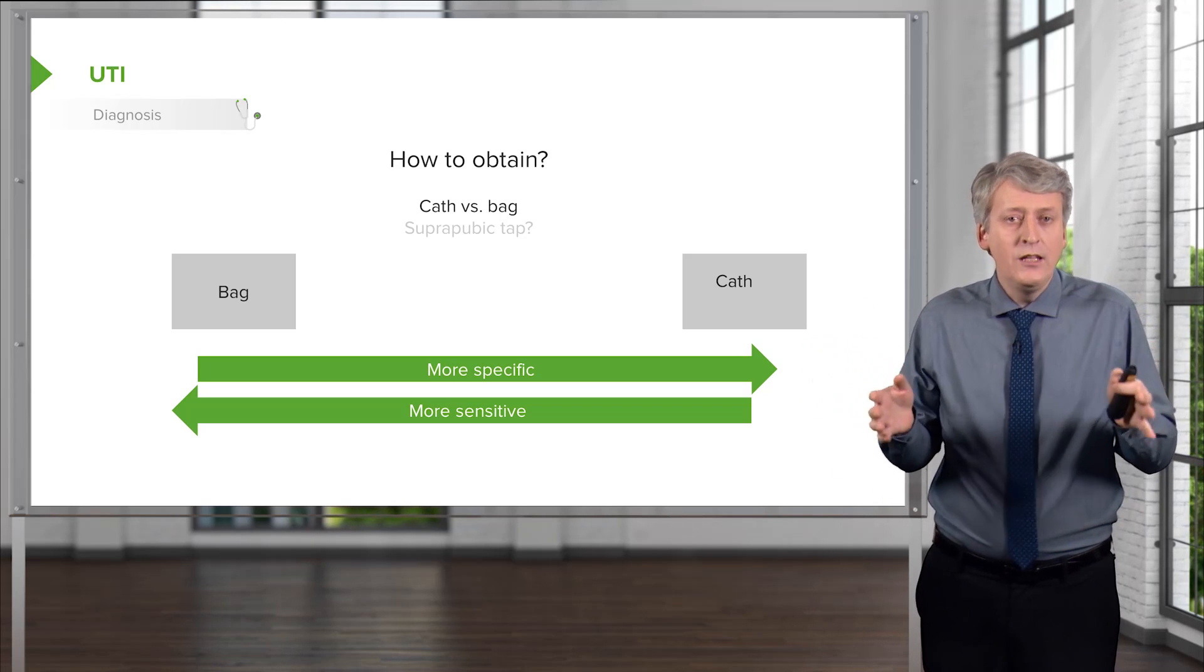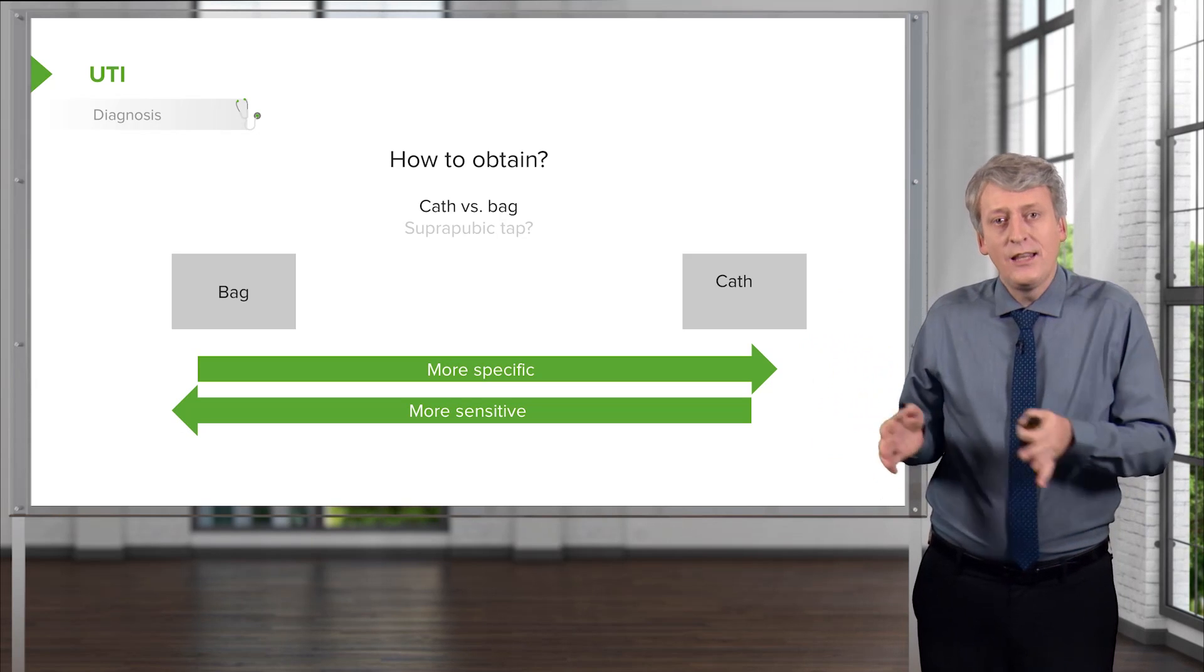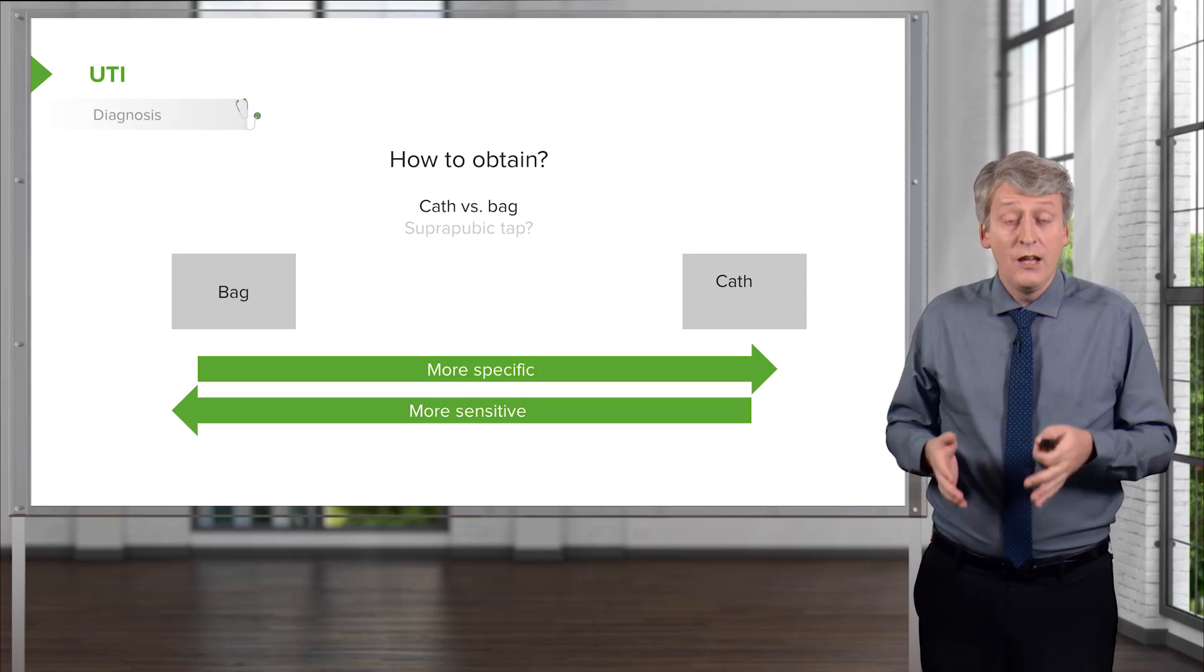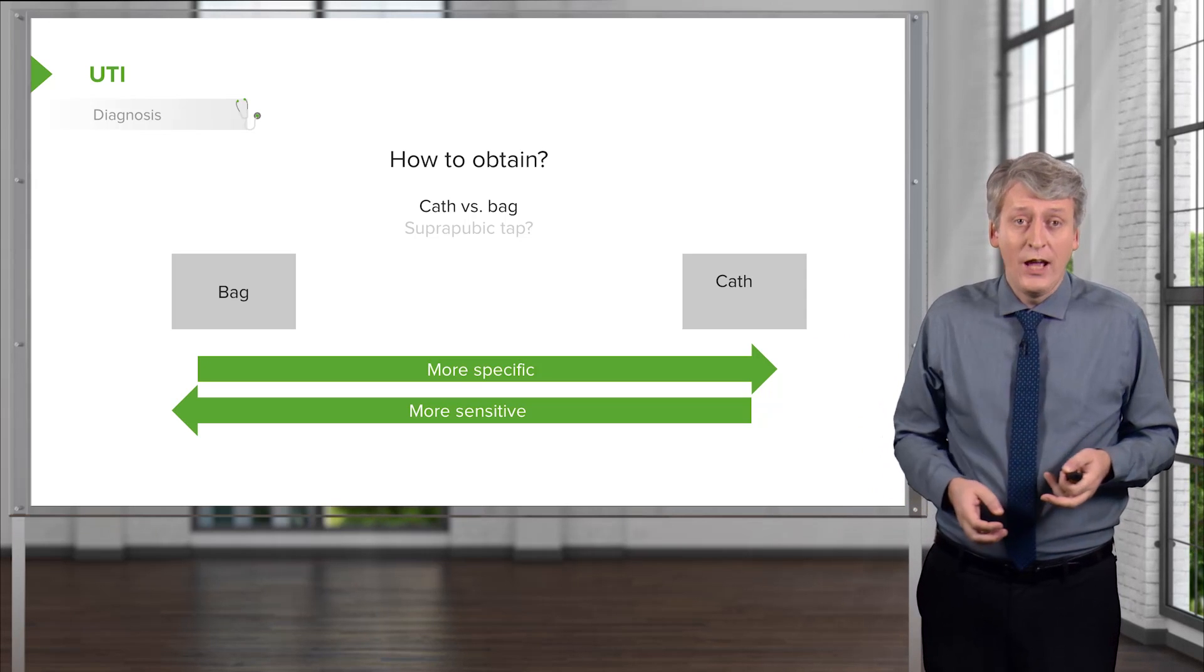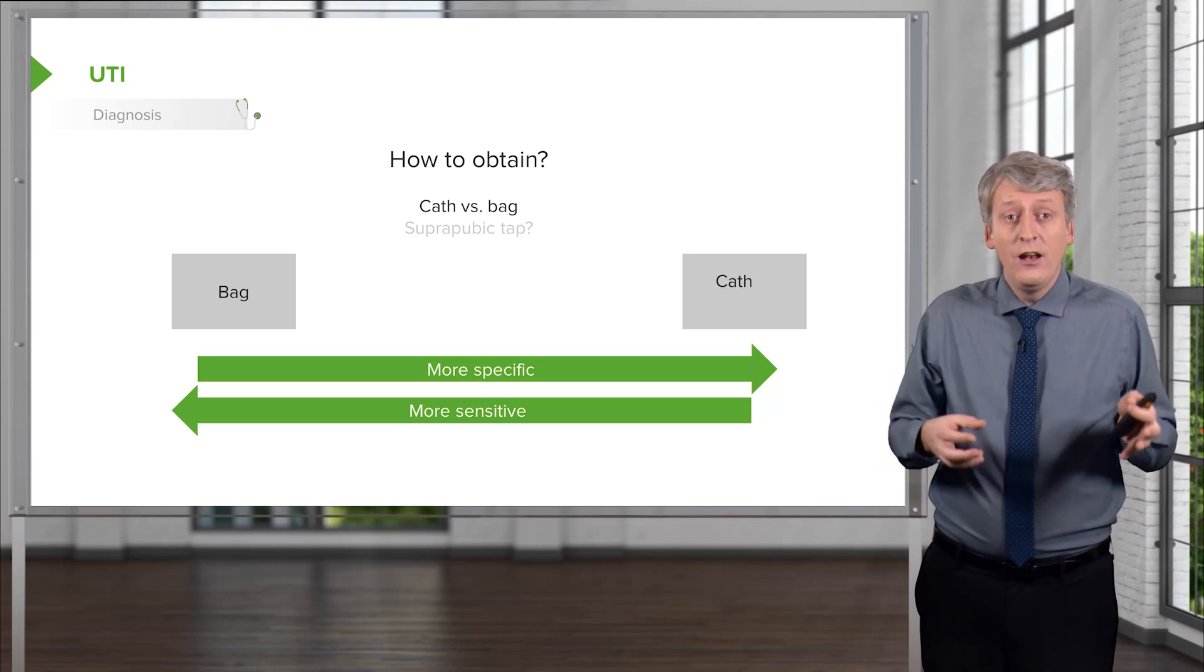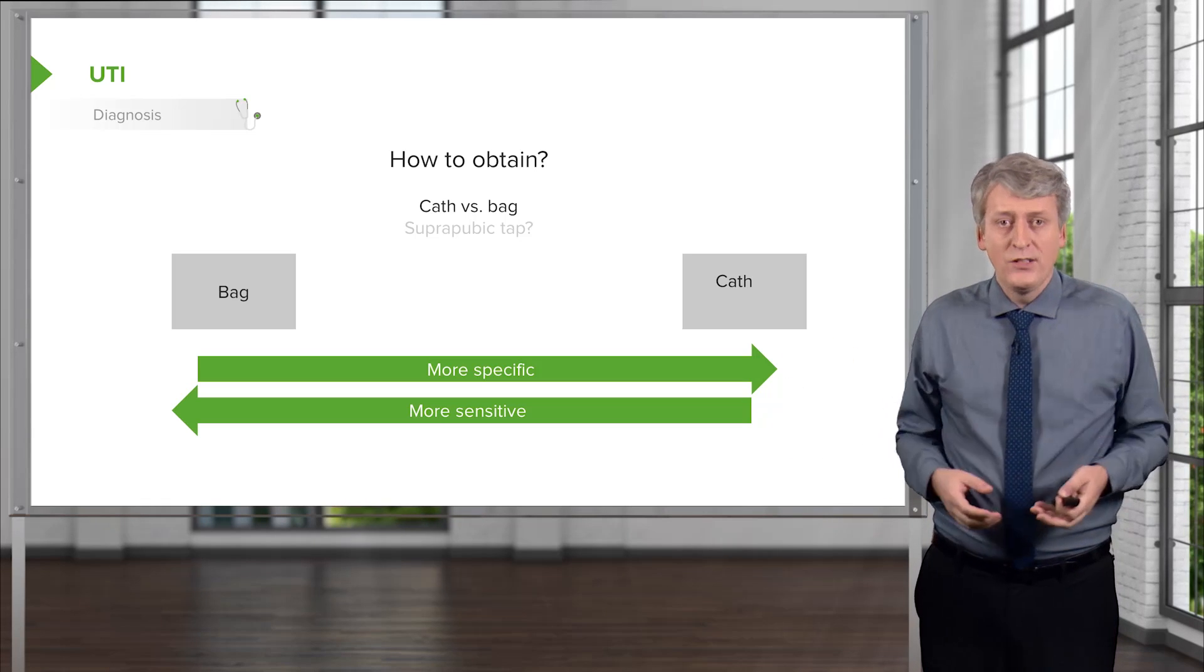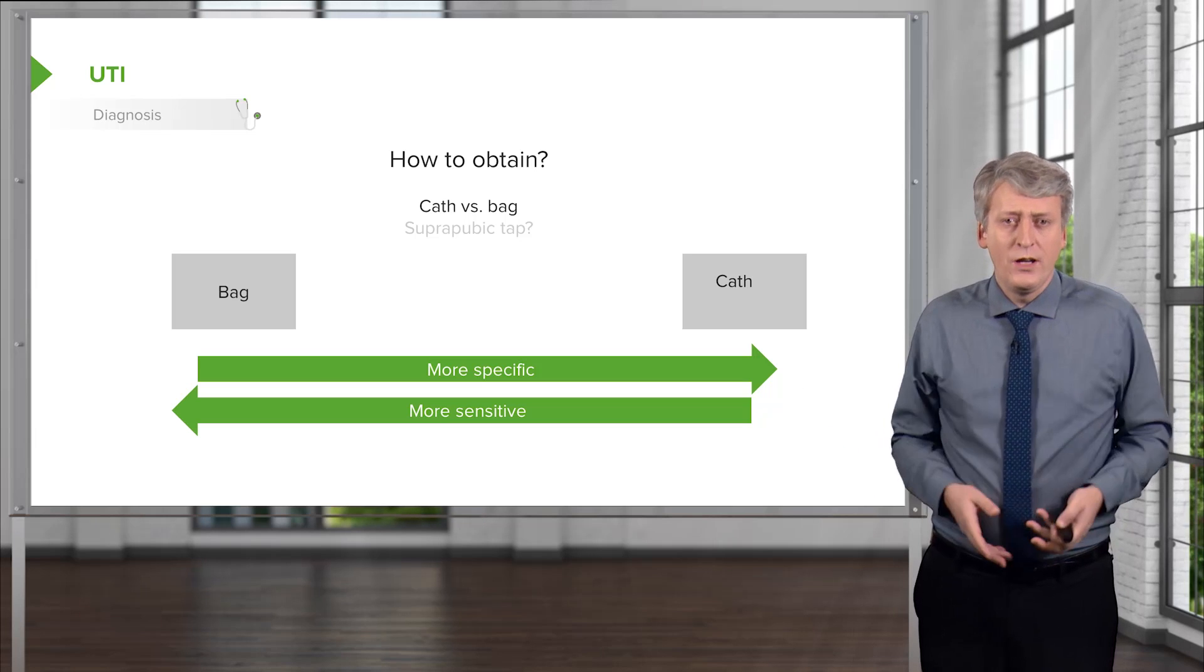In general, in the United States, we've decided that the cath specimen is superior. Now, there are some ways you can work around this. If you have time, you might bag the child, and if the bag is negative, then you're done, and then proceed to catheterization if it's positive. But most centers just go straight to catheterization.